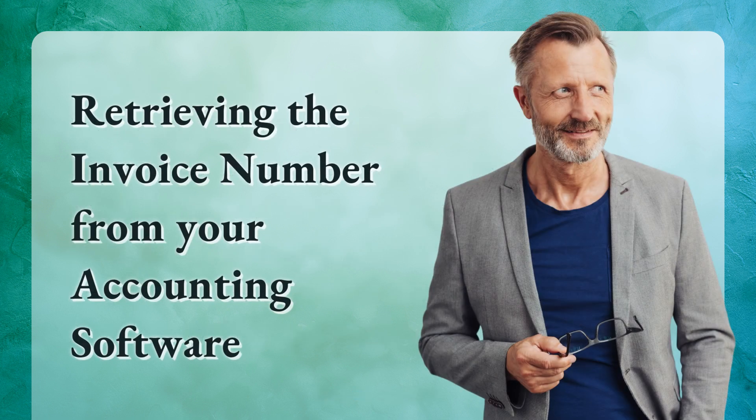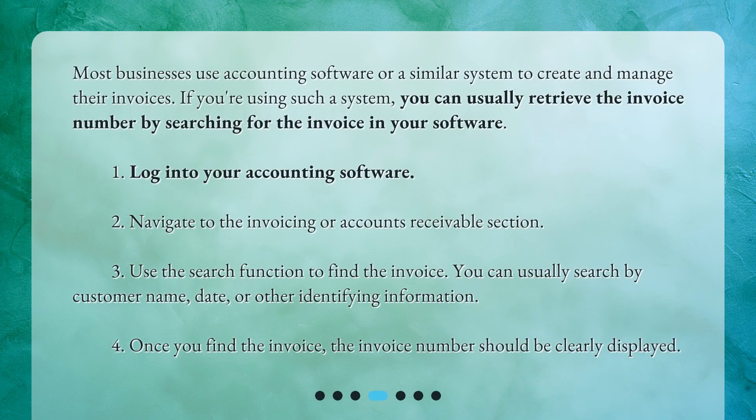Retrieving the invoice number from your accounting software. Most businesses use accounting software or a similar system to create and manage their invoices. If you're using such a system, you can usually retrieve the invoice number by searching for the invoice in your software: 1. Log into your accounting software. 2. Navigate to the invoicing or accounts receivable section. 3. Use the search function to find the invoice — you can usually search by customer name, date, or other identifying information. 4. Once you find the invoice, the invoice number should be clearly displayed.